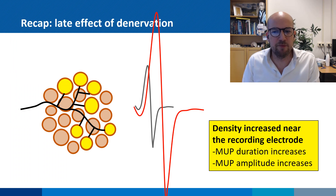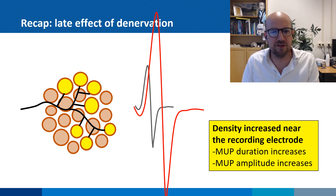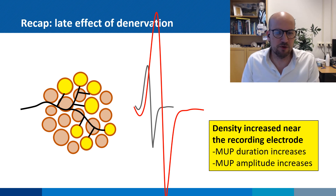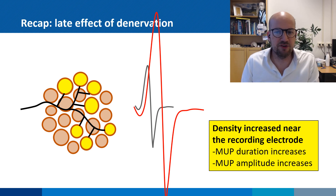Over time, re-innervation will continue to take place and these nerve endings that have been re-innervating these muscle fibers become more mature. We now have a situation in which the density of muscle fibers near the recording electrode is increased, and this leads to a larger and longer duration motor unit potential.